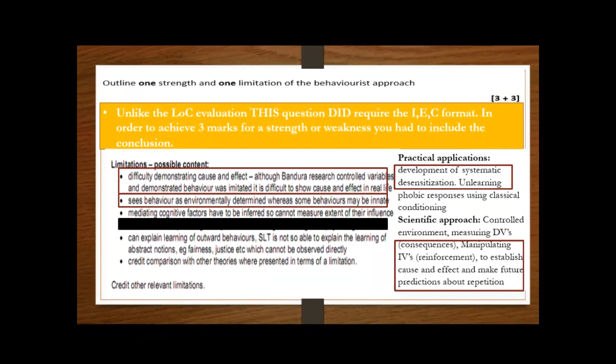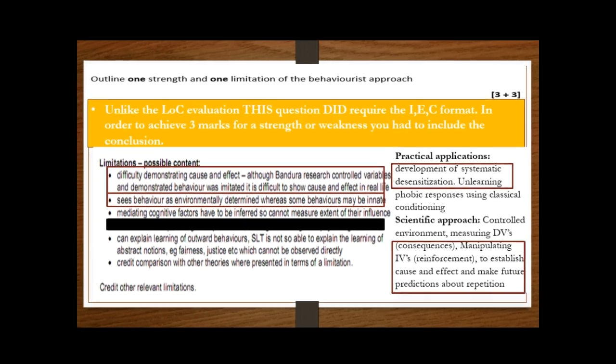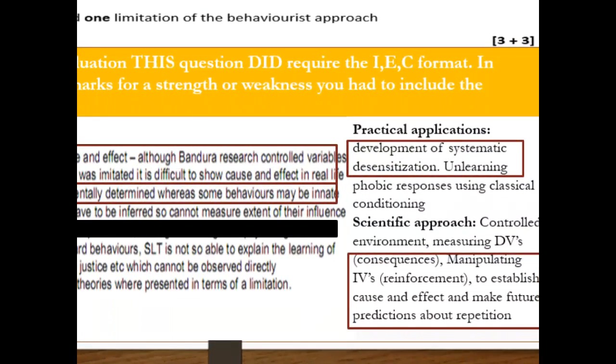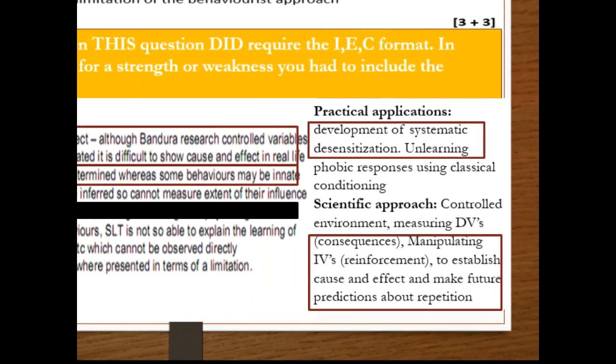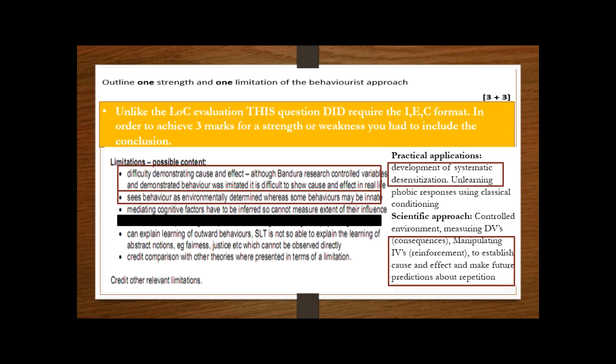A lot of you did do that, and also something that's not on the mark scheme which a lot of you chose to do was the animal research point—that a lot of the research from Skinner and Pavlov is based on dogs and rats. Less complex than us, obviously they don't have free will, they can't make their own choices, so therefore the behaviorist approach is a little bit invalid in terms of explaining human behavior. The strengths, I have to say, were better than the weaknesses. So the practical application point was really, really good, talking about systematic desensitization and unlearning things. And then a lot of you went for that more basic point about it being scientific.